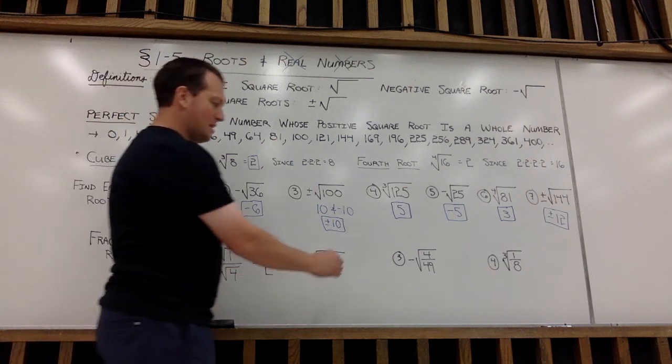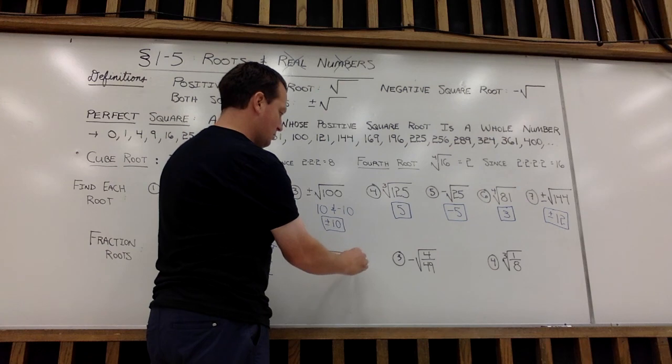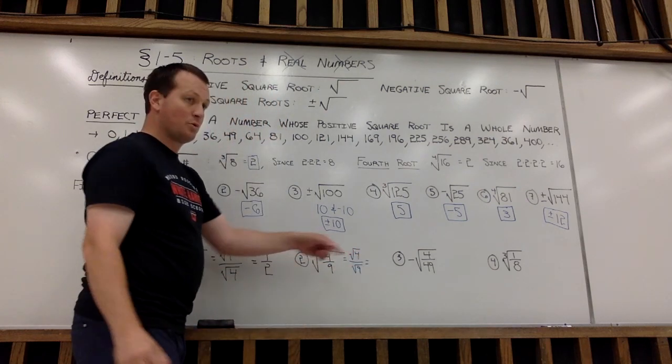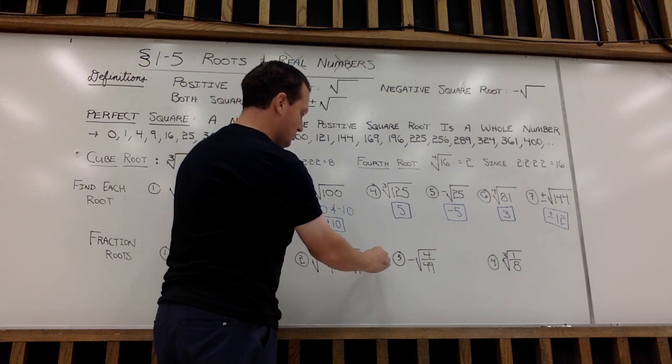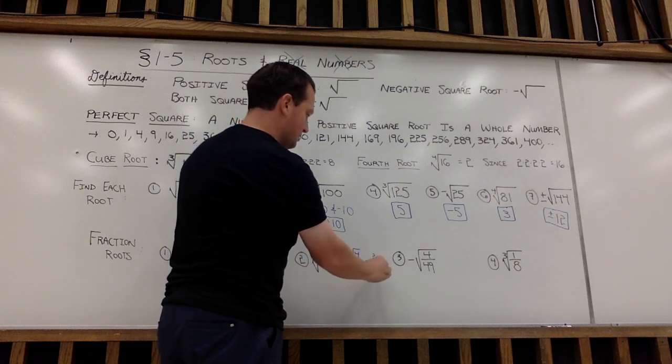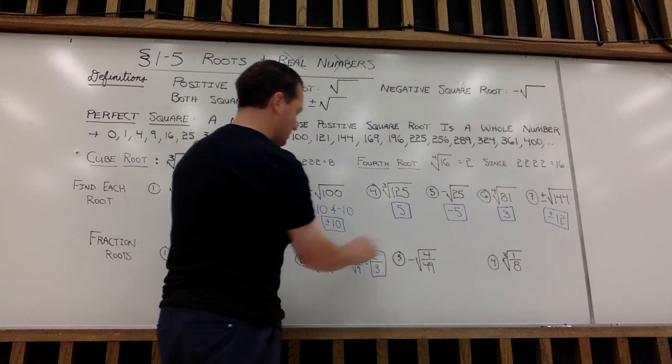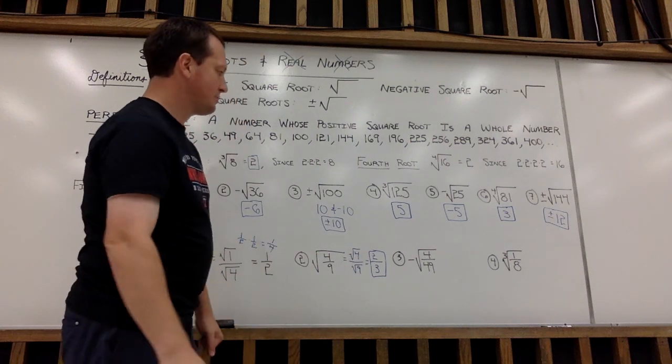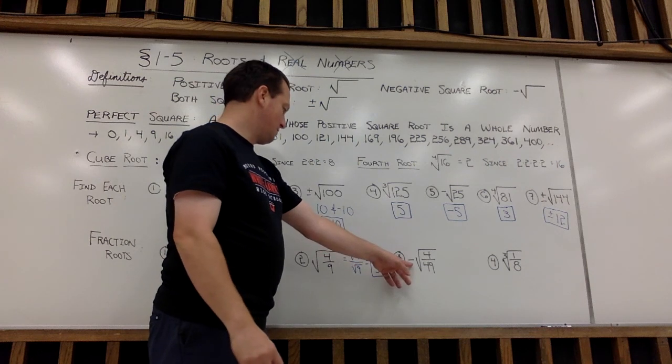Similarly, with example 2, I'm going to take the square root of 4 over the square root of 9. The square root of 4 is 2. The square root of 9 is 3. So the square root of 4/9 would end up being 2/3.